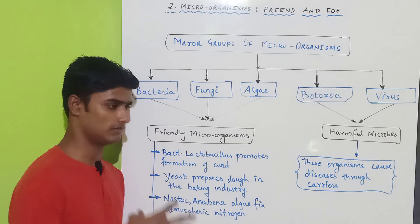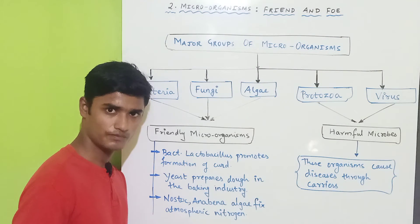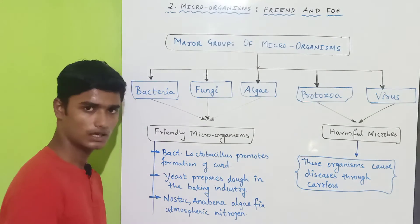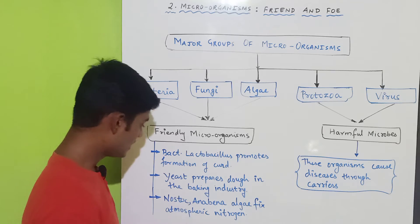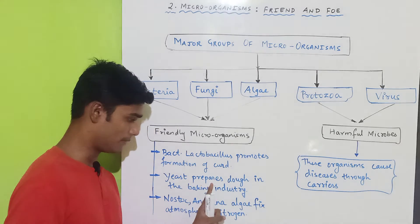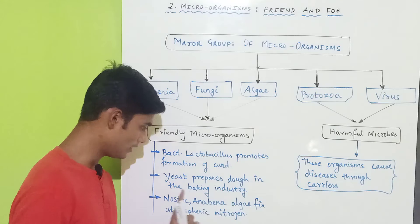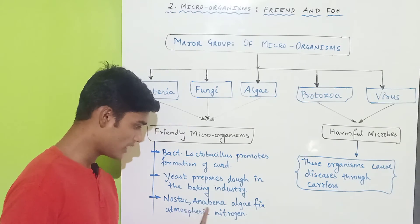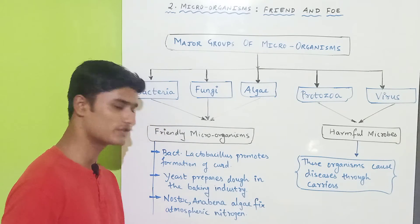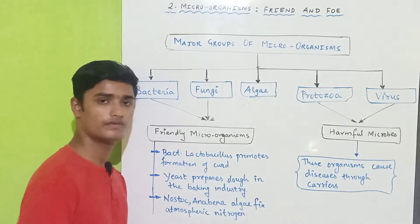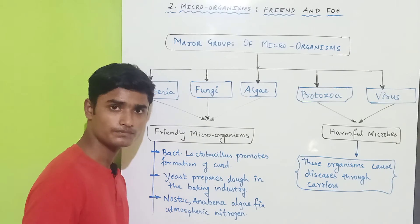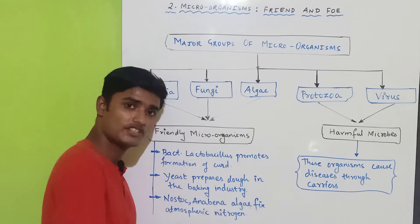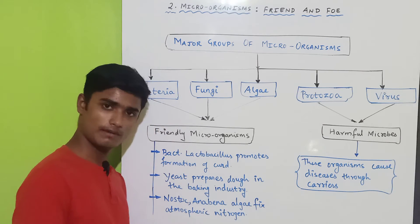Another common example is that yeast prepares dough in the baking industry. Also, Nostoc and Anabaena fix atmospheric nitrogen. We are going to study atmospheric nitrogen in a broad way in a separate lecture, because it is covered in detail in our book.